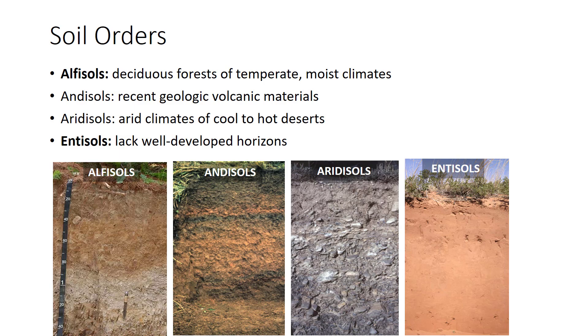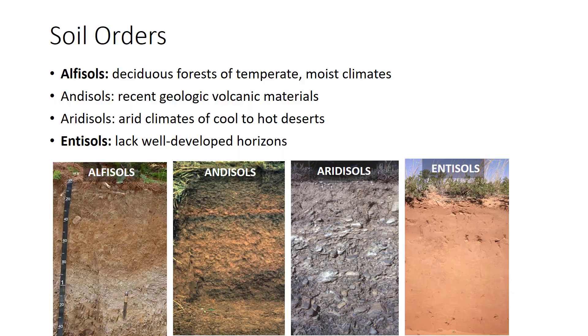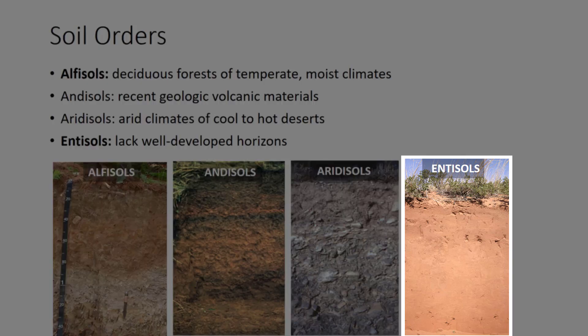Aridisols are soils of arid climates of cool to hot deserts and shrublands, often with alkaline and salted horizons. Arid means dry. Aridisols are not productive for agriculture unless irrigated, as many are in the western United States. Aridisols lack well-developed horizons.